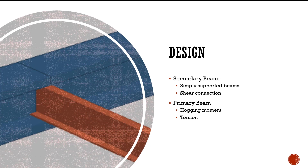For the primary beam, apart from major axis bending and minor axis bending, we need to design for torsion, because many secondary beams connect to the main beam and there is a high chance of producing twisting in the main beam. So the main beam must be designed for torsion.